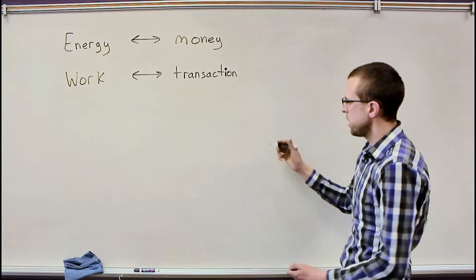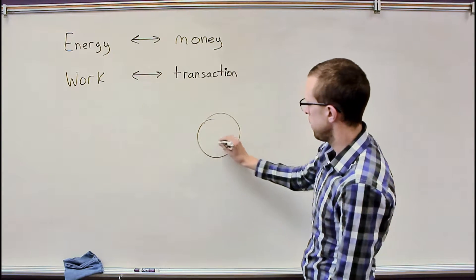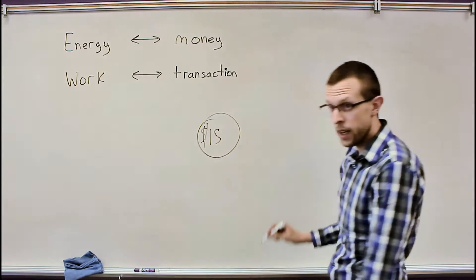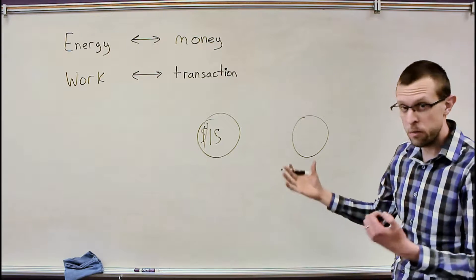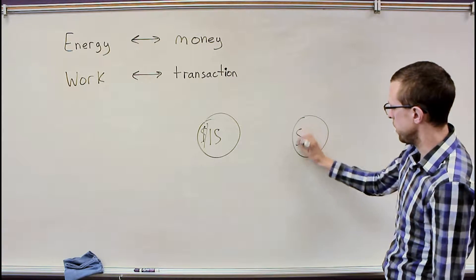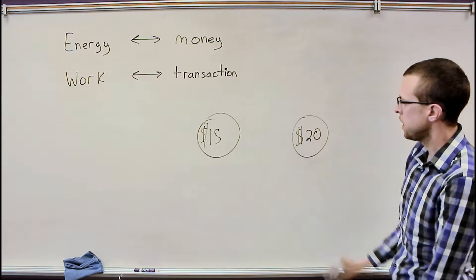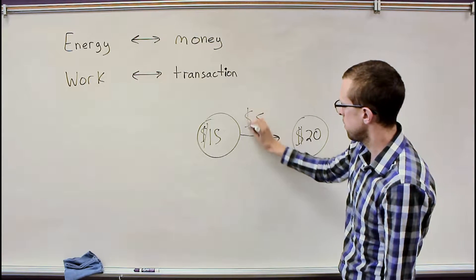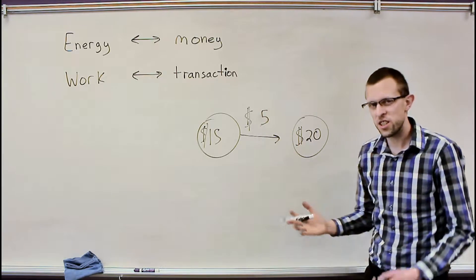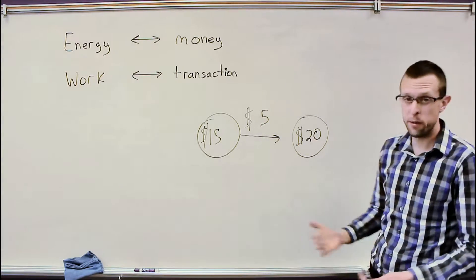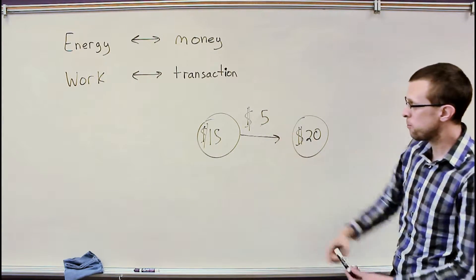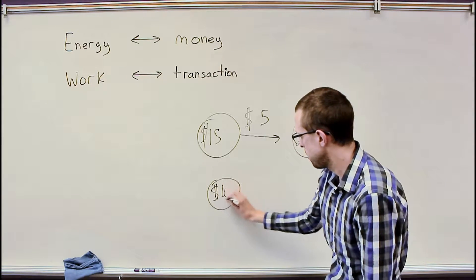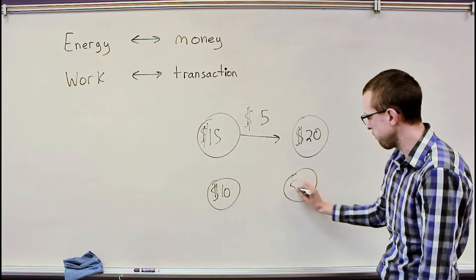So, as an example here, if this is me and I've got, say, $15 and I were to exchange money with you and you've got, say, $20. If I were to give you $5, we each experience this change in the amount of money that we have, right? So, if I give you $5, I end up with just $10 and you end up then with $5 more, $25.